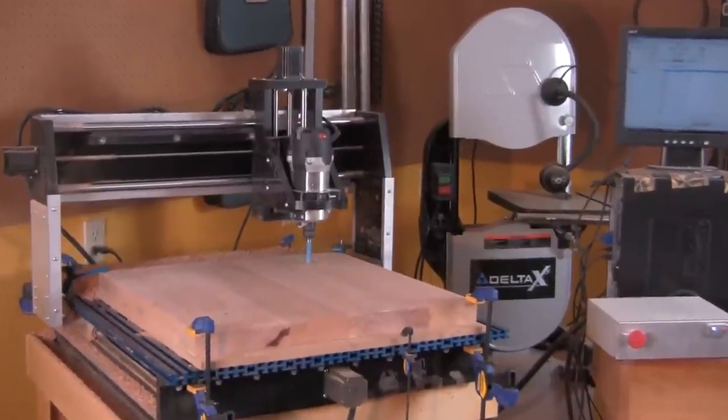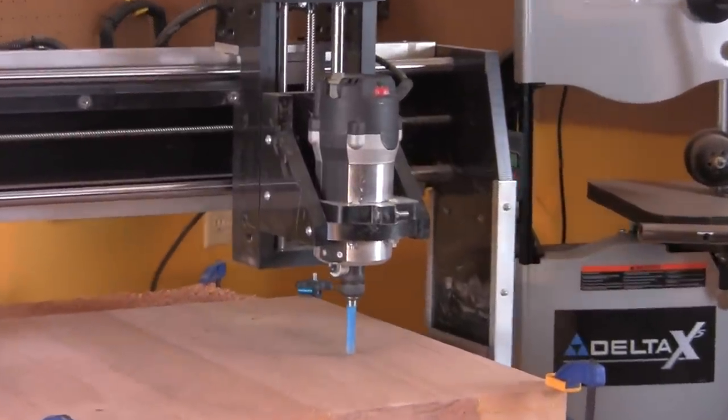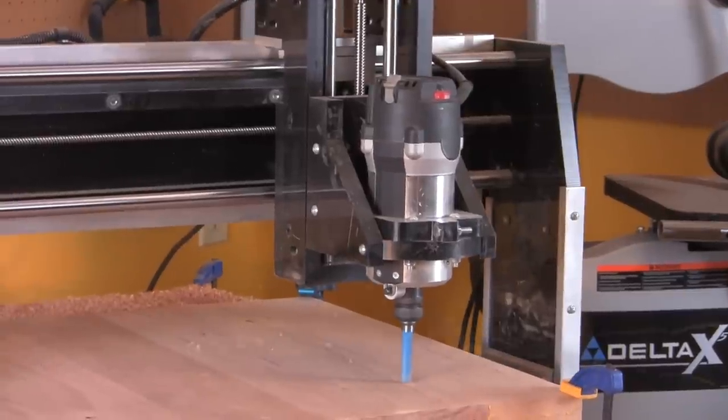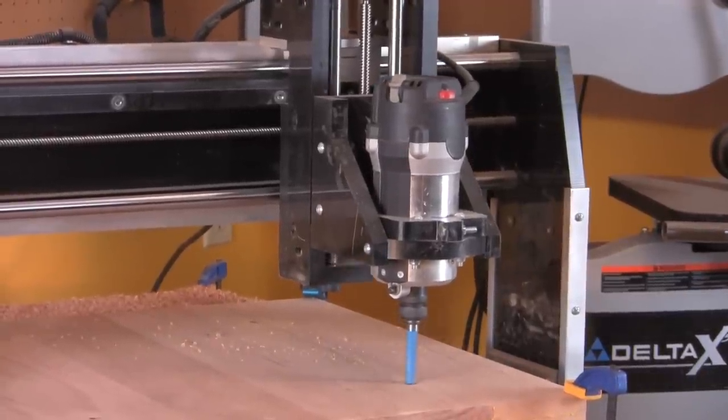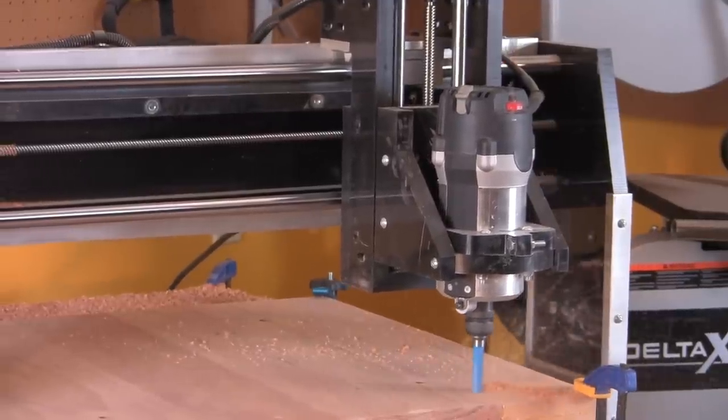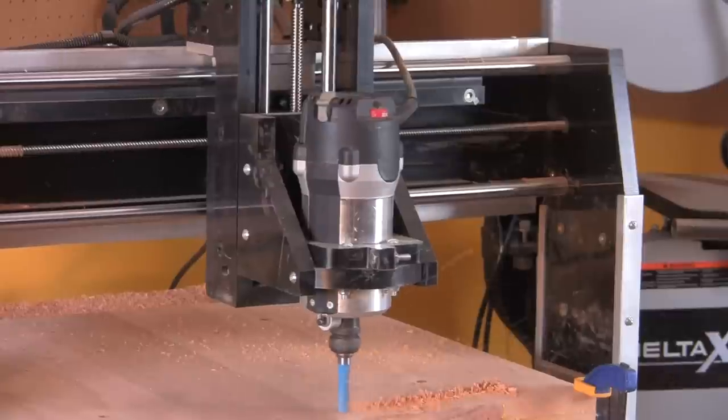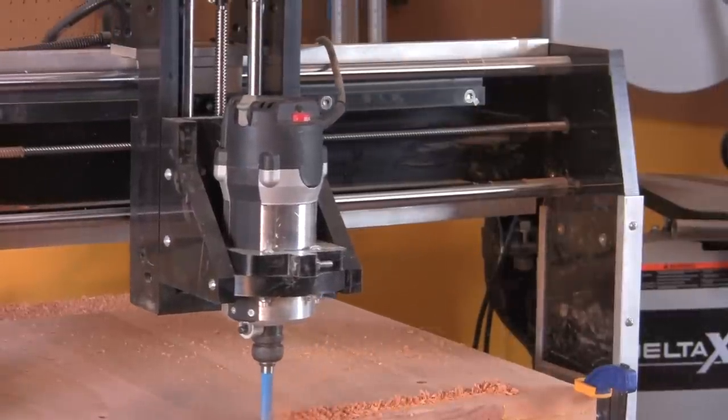The tabletop was up next. I tested the cuts and found that the machine was set up to bore the dowel holes all the way through the top. I only wanted the holes to go in about a half an inch, so that needed to be adjusted in the CRV file. Another test run to see if I got it right and it was time to start the cutting process and cut out the last component.